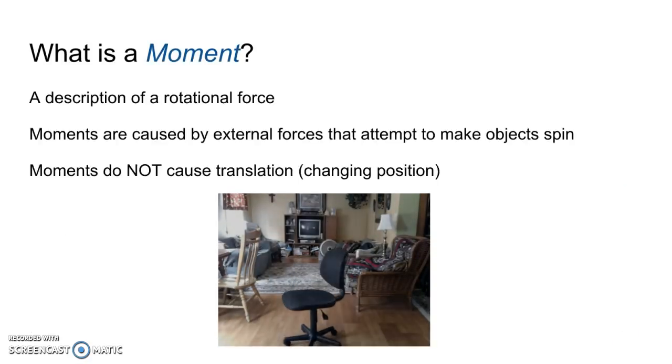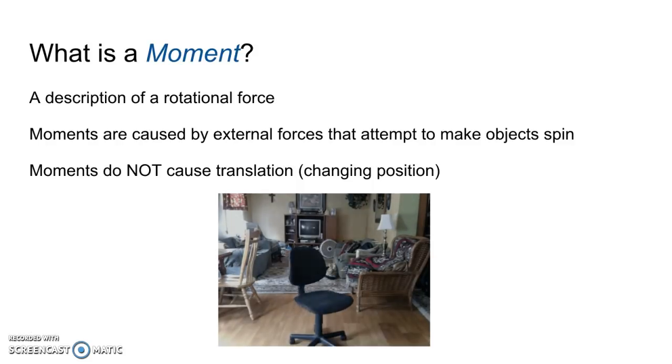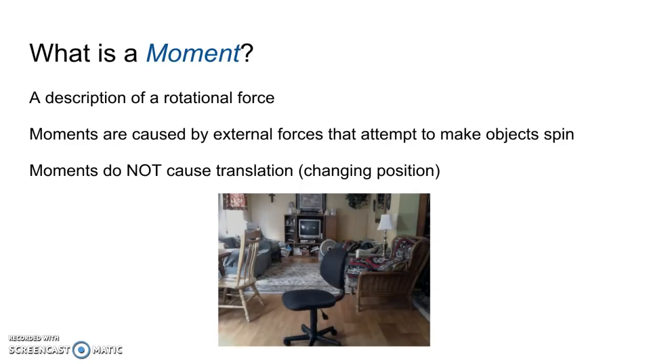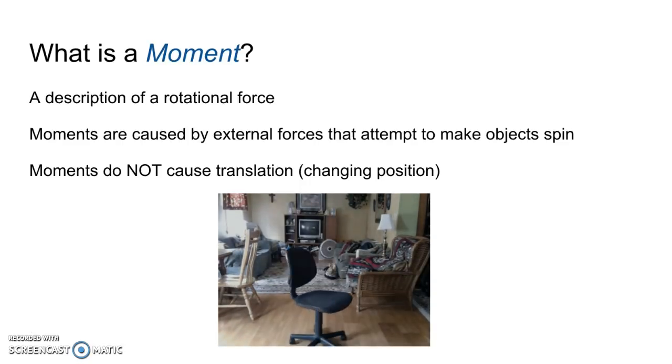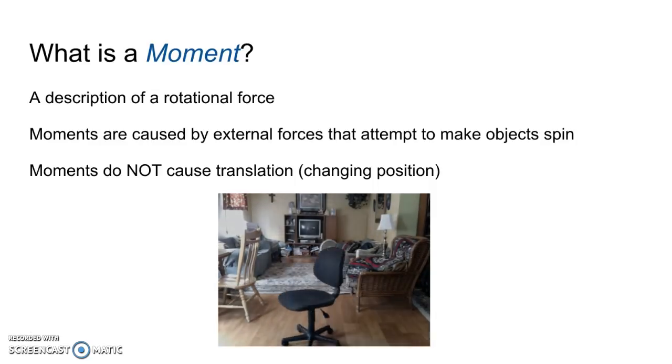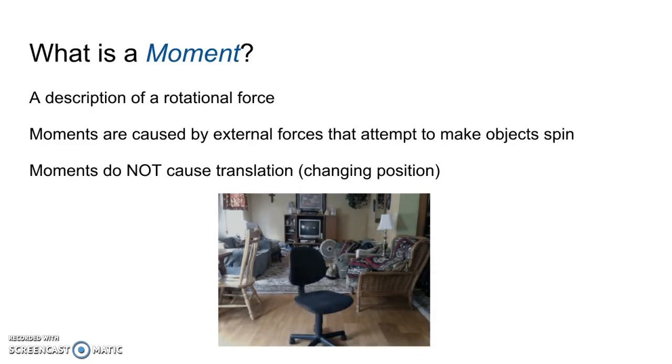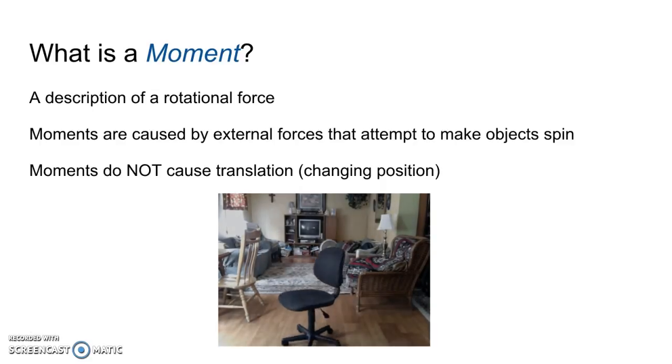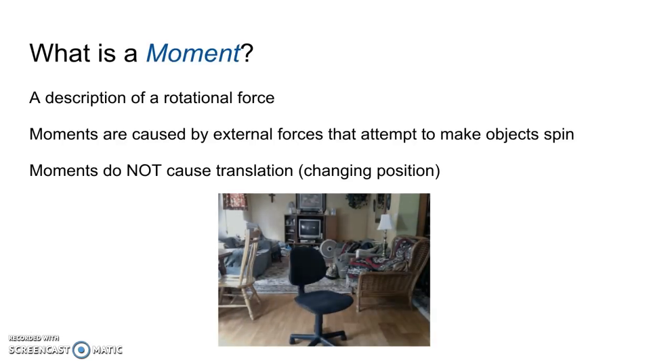First of all, what is a moment? A moment is a description of a rotational force, like perhaps the one that would cause the chair in the picture below to spin. Moments are caused by external forces, like maybe it's you pushing on the chair, and it makes the object spin or at least attempts to make the object spin. One thing to note is moments do not cause translation. In other words, a moment is not the force that I might apply on the chair that would cause it to roll across the room. We're talking about spinning in place, and that's what the moment is—the rotational piece of that.